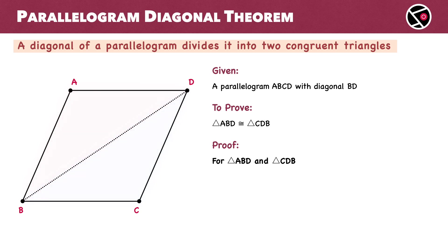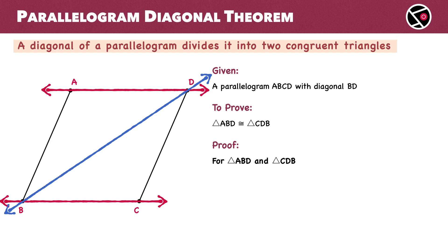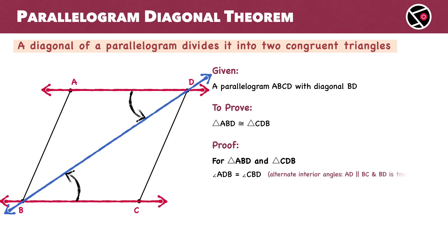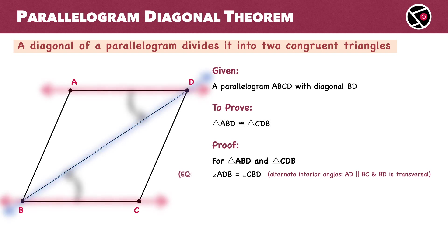We know that opposite sides of a parallelogram are parallel. So, AD is parallel to BC. We also have a transversal BD that intersects both these parallel lines, AD and BC. This means that angle ADB equals angle CBD. Why? These are alternate interior angles. This is equation 1.